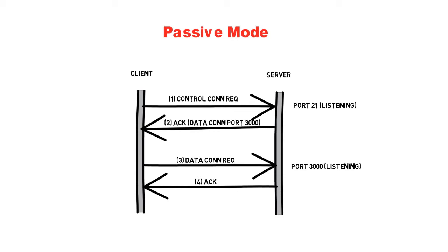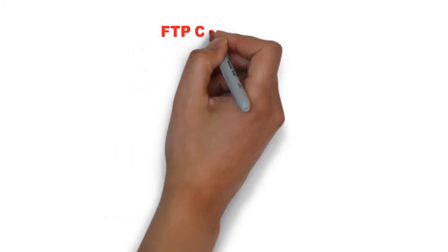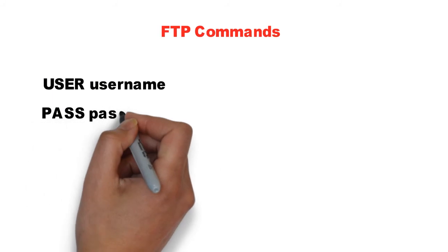In passive mode, port number 20 is not used — port 20 is only used in active mode. The most common commands used in FTP are user, pass, list, retrieve, and store.